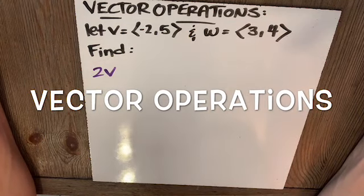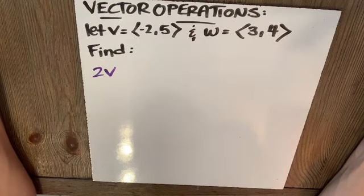Vector operations. Let V equal negative 2, 5 and W equal 3, 4. That's V1, V2 and W1, W2 respectively.